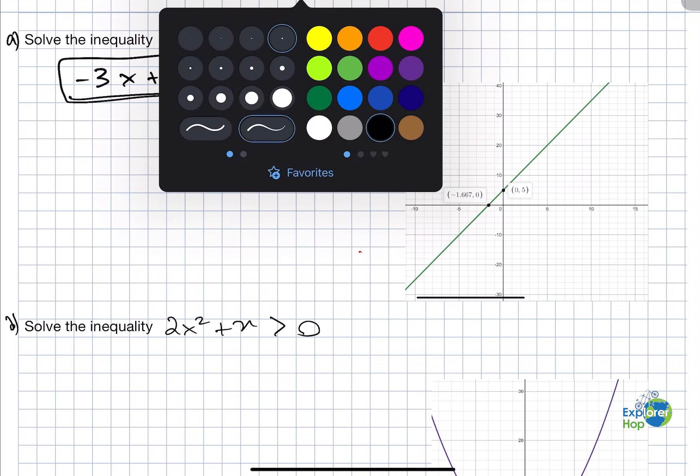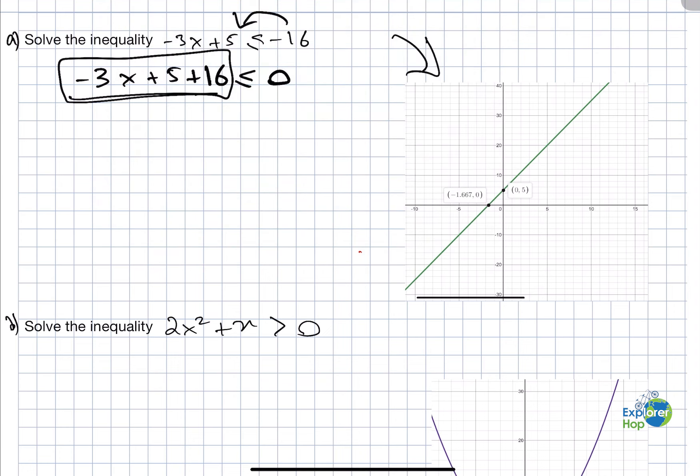Now that I've done that, I'll take a look at the graph and see where it's less than 0. As you can see, from this point onwards, the graph is less than 0 when x is less than -1.66.